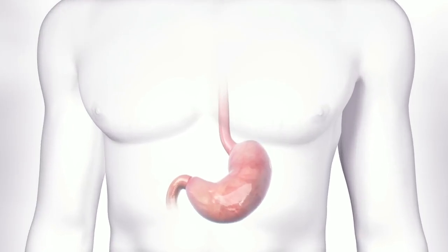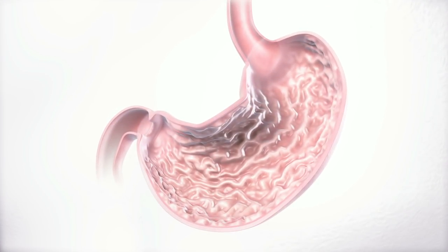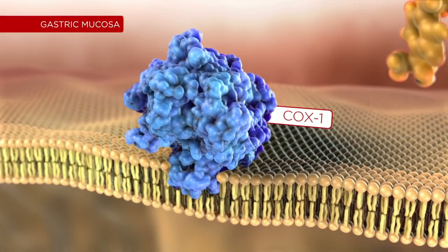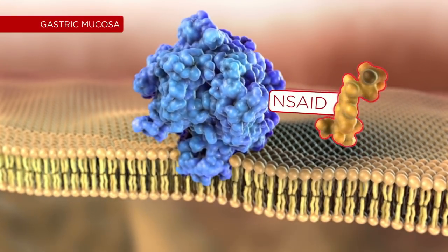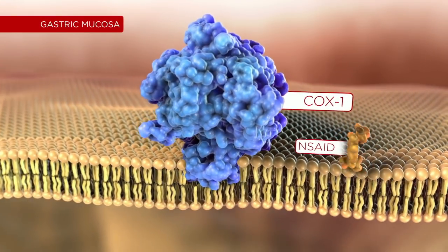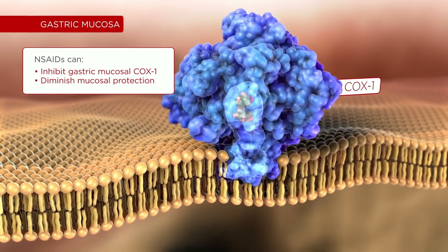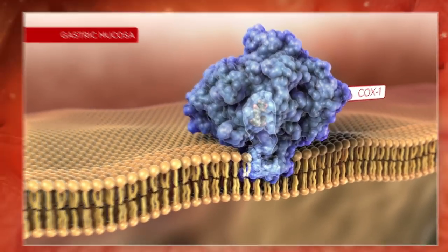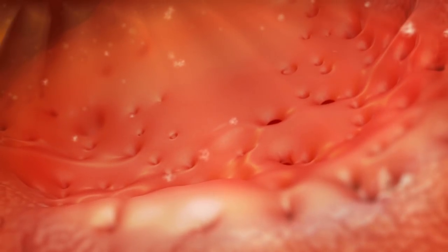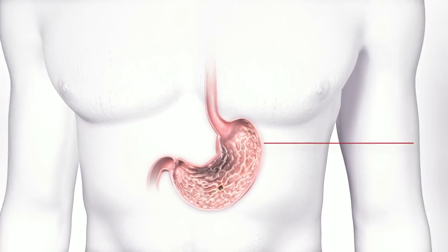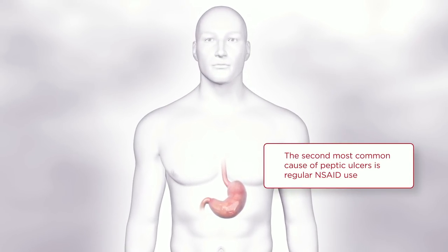In the stomach, cyclooxygenase 1 plays an important role in gastric mucosal protection. NSAID inhibition of COX-1 can diminish this COX-1 mediated protective mechanism. This can lead to GI side effects such as irritation and bleeding. In fact, the second most common cause of peptic ulcers is regular use of NSAIDs.